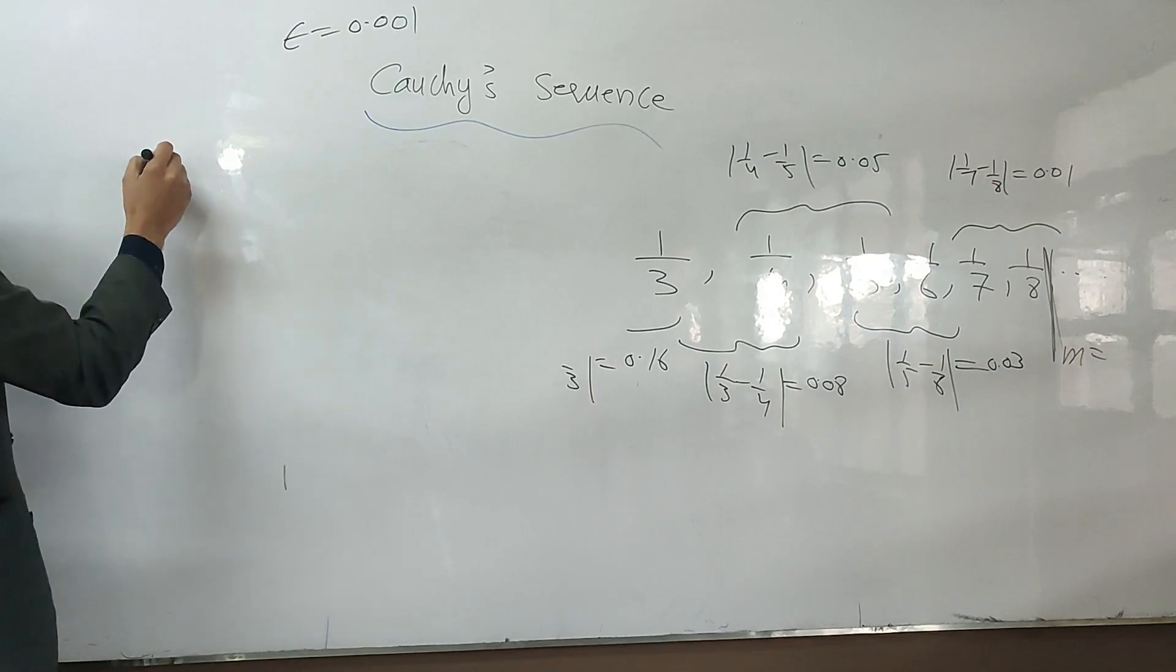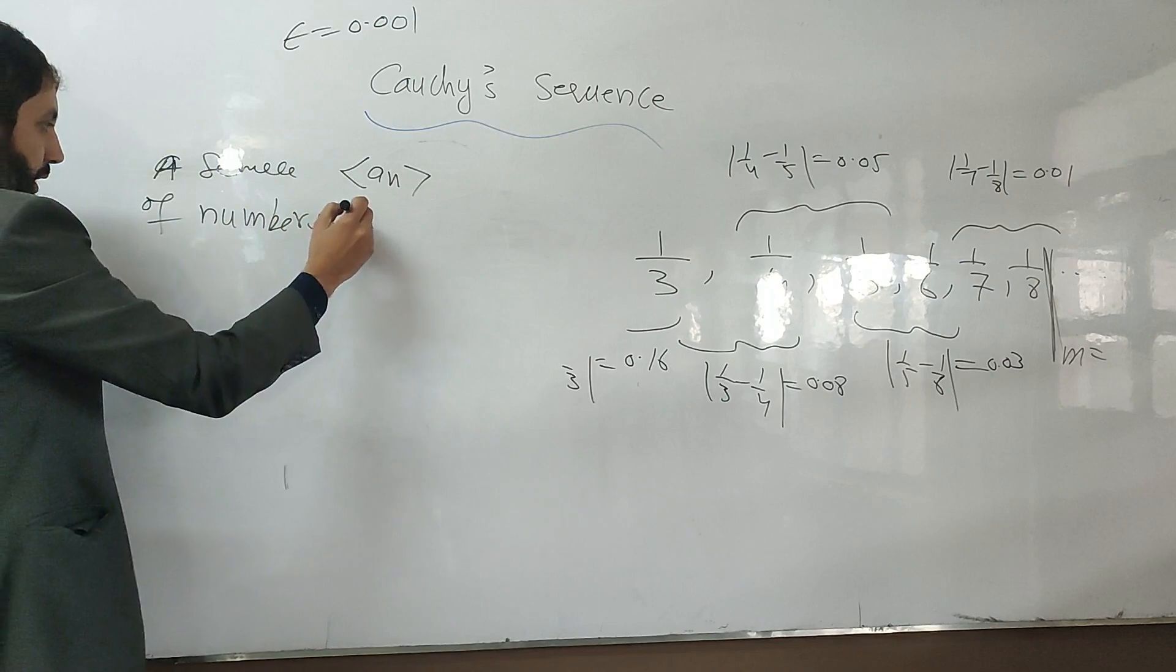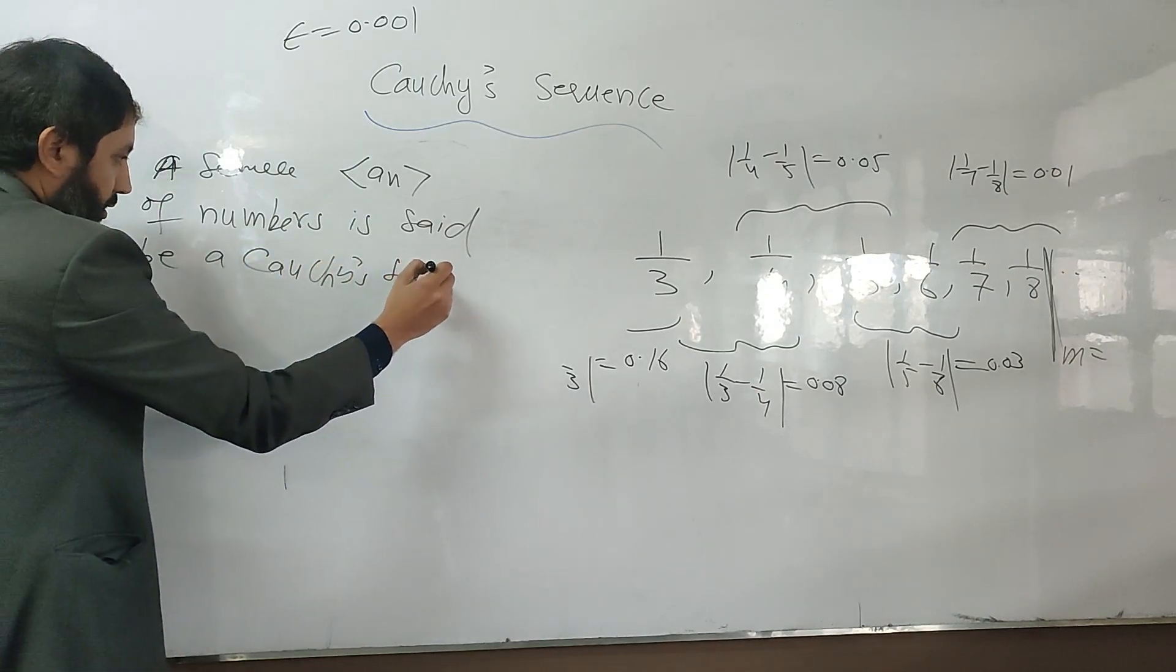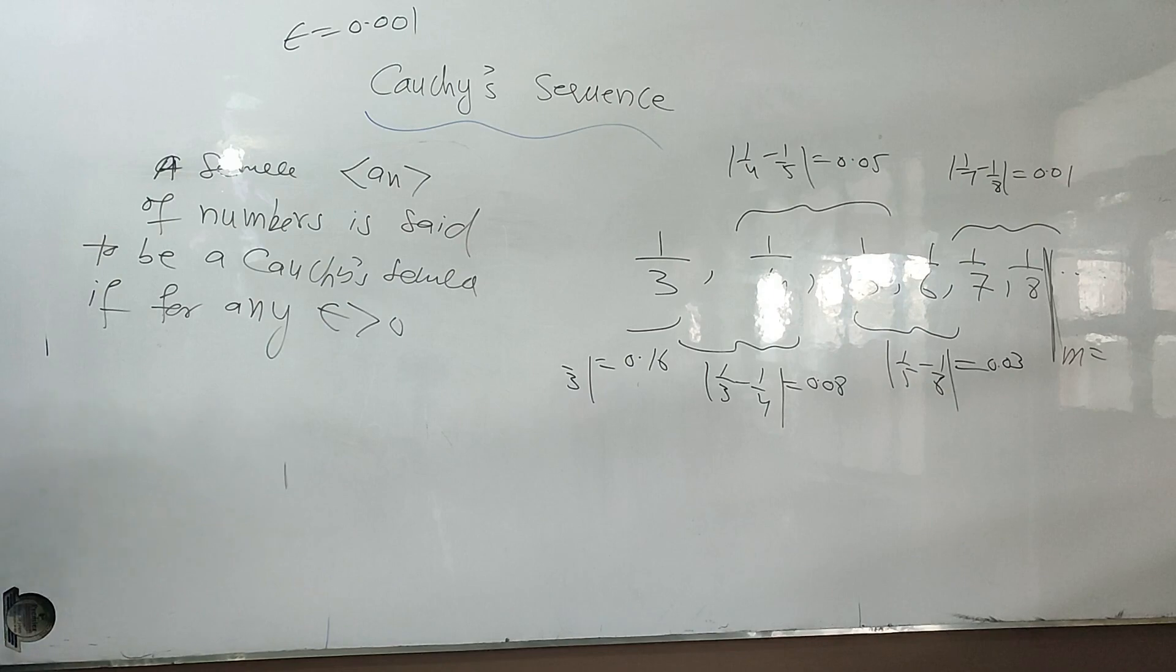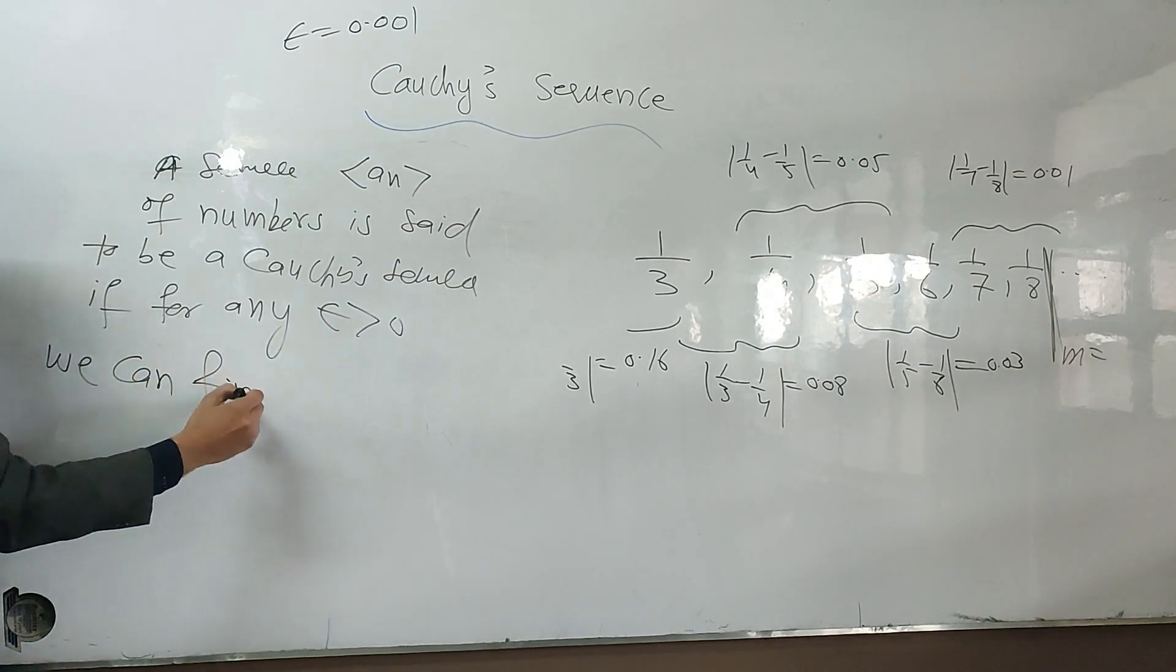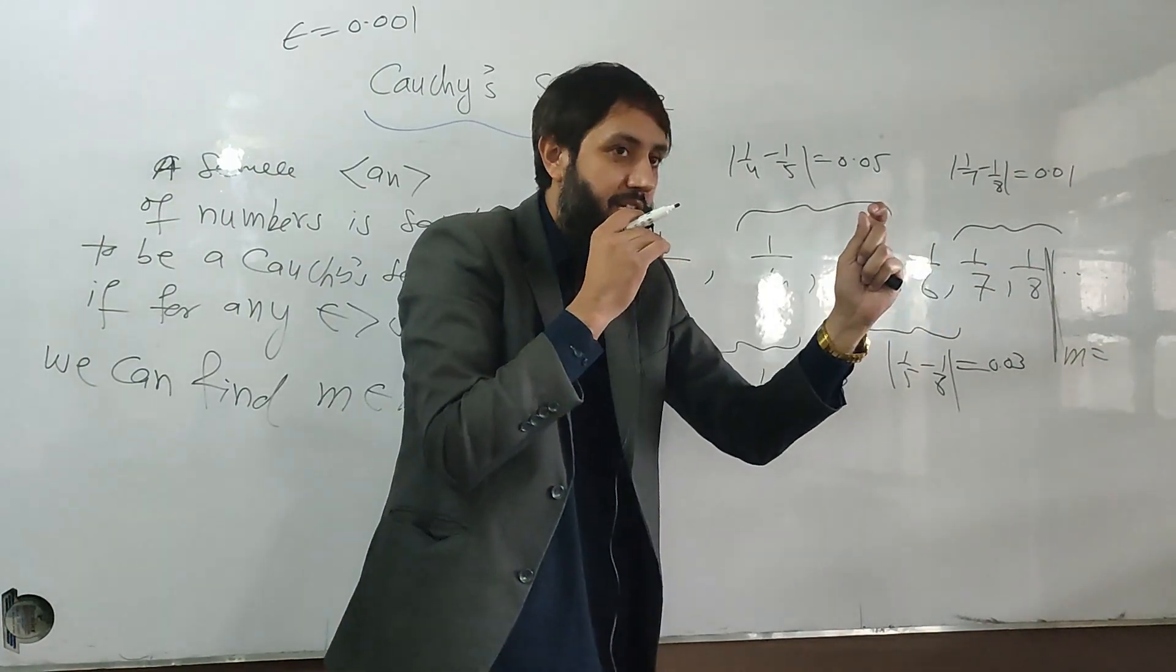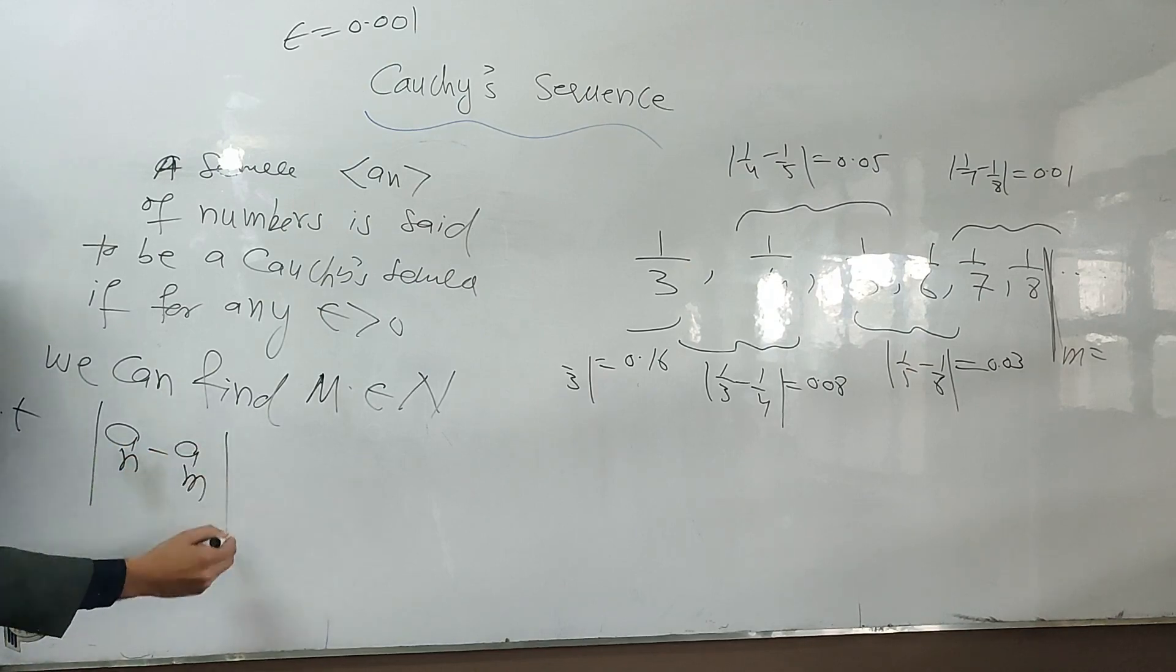A sequence {a_n} of numbers is said to be a Cauchy sequence if for any epsilon greater than zero, we can find a natural number, we can find a term, a natural number n such that... sorry, a natural number say m such that |a_n - a_m| is less than epsilon for m and n greater than m.